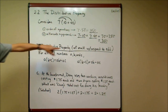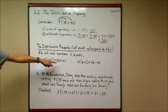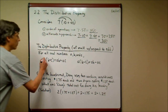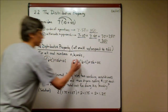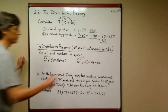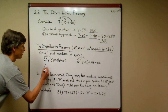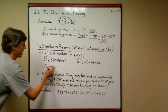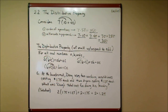The distributive property's proper name is the distributive property of multiplication with respect to addition or subtraction — that's a lot to say, so we usually just say the distributive property. It states that for all real numbers a, b, and c: a times the quantity (b + c) equals a·b + a·c. Similarly, a times (b − c) equals a·b − a·c. You can also put the a on the right-hand side: (b + c)·a = b·a + c·a. It's the same thing.